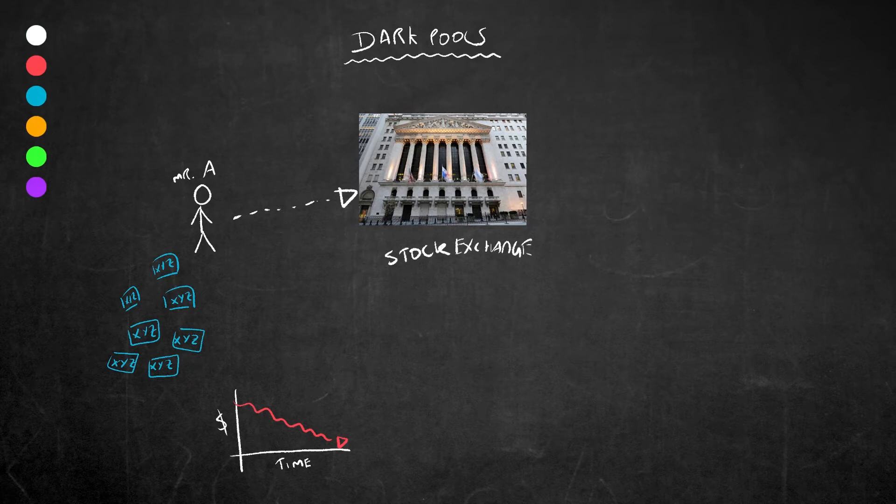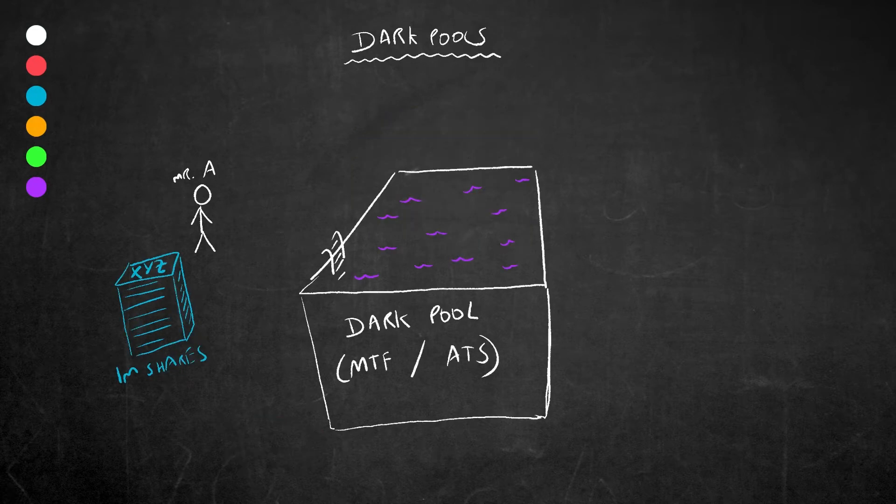In short, going through a public exchange to sell his 1 million shares means Mr. A might not get as much money for them, his intention to sell will not be secret, and it may take a long time to complete the trade. So instead he goes to something called a dark pool. These dark pools are a form of multilateral trading facilities or an alternative trading system as they call it in the U.S. It is basically an off-exchange trading venue or forum where large orders can be fulfilled without the general public knowing as it happens.